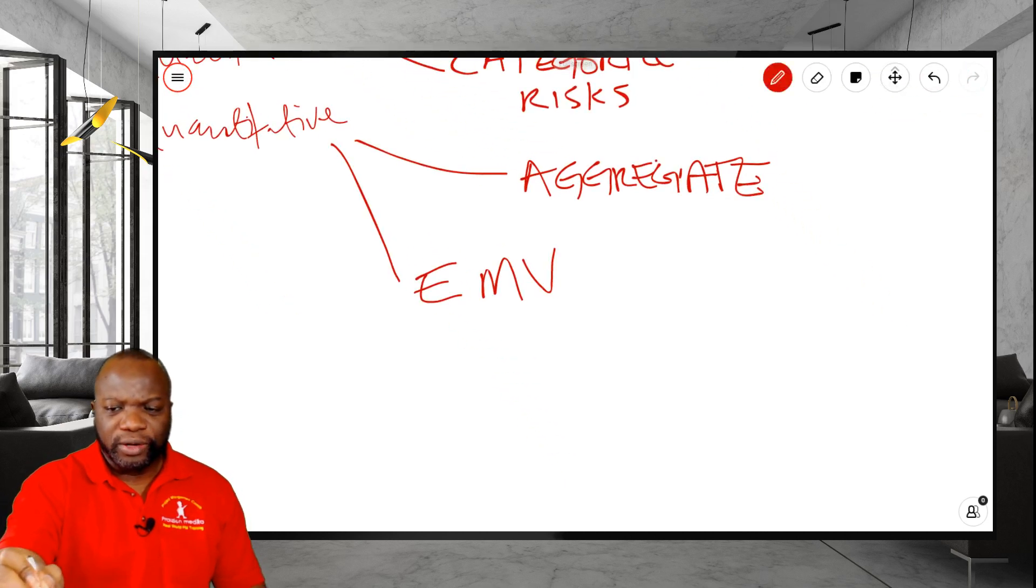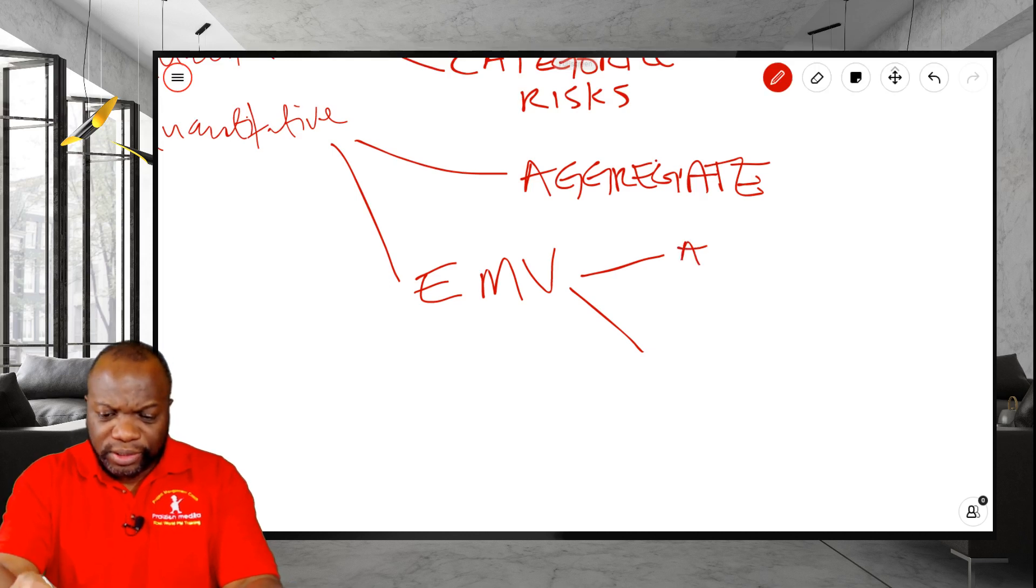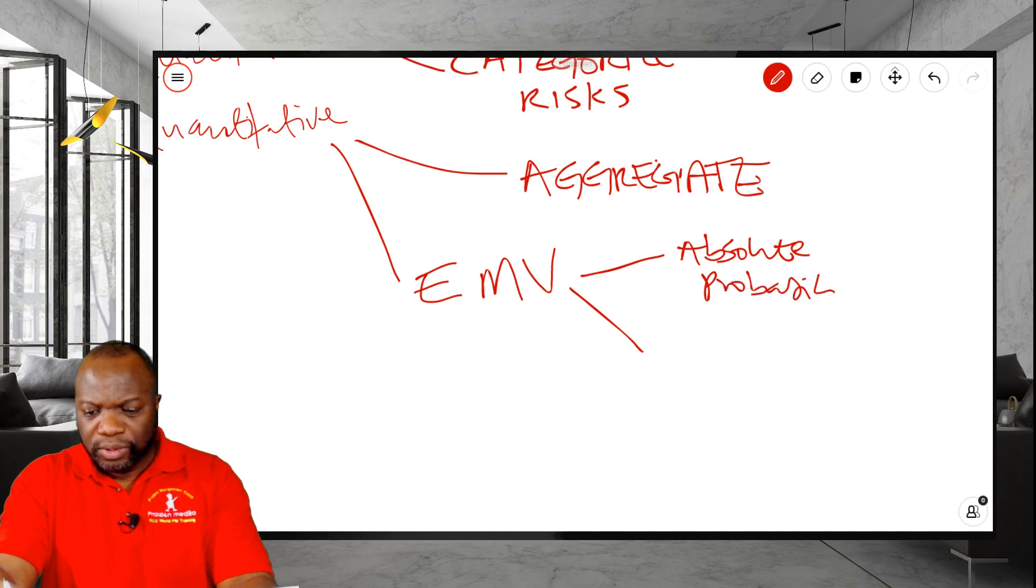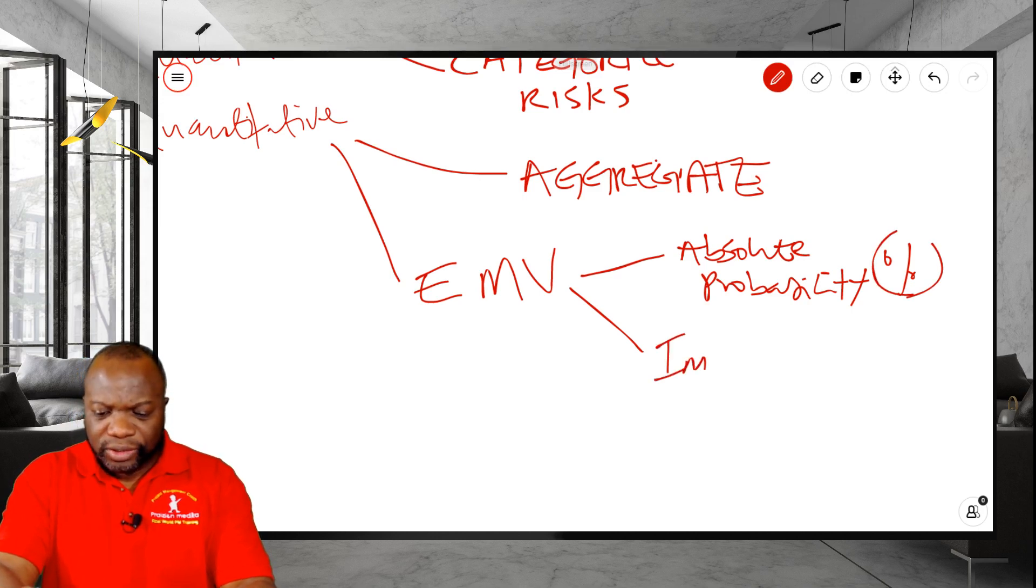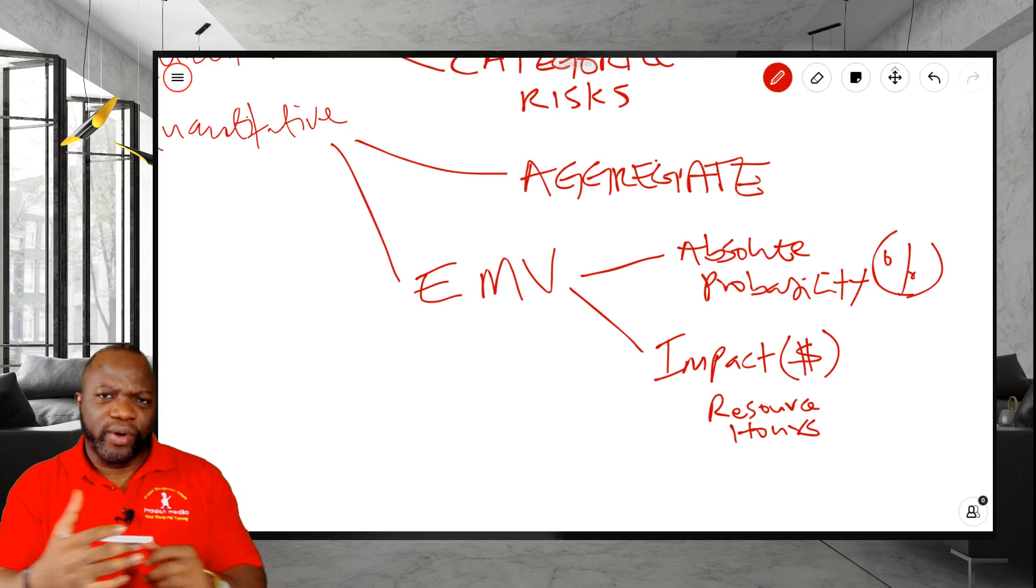Now, EMV should not be confused with scoring risks. Is it similar? It is, but it's not the same thing. For EMV, we are using what I would call the absolute probability, probability in percent, and we'll be using the impact. The impact is not going to be just any old number. The impact is either going to be in dollars, or it's going to be in resource hours, or some other quantitative measure.